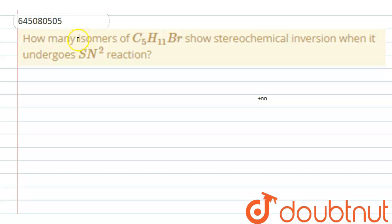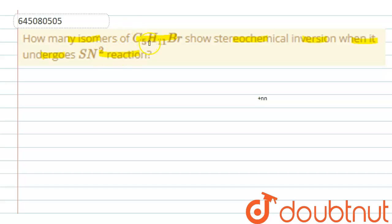Dear students, the question is: how many isomers of C5H11Br show stereochemical inversion when they undergo an SN2 reaction? We have to find out which isomers of C5H11Br undergo stereochemical inversion in an SN2 reaction.